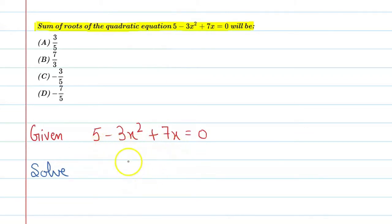We need to write it in proper order, and the order is -3x² + 7x + 5 = 0. All right.